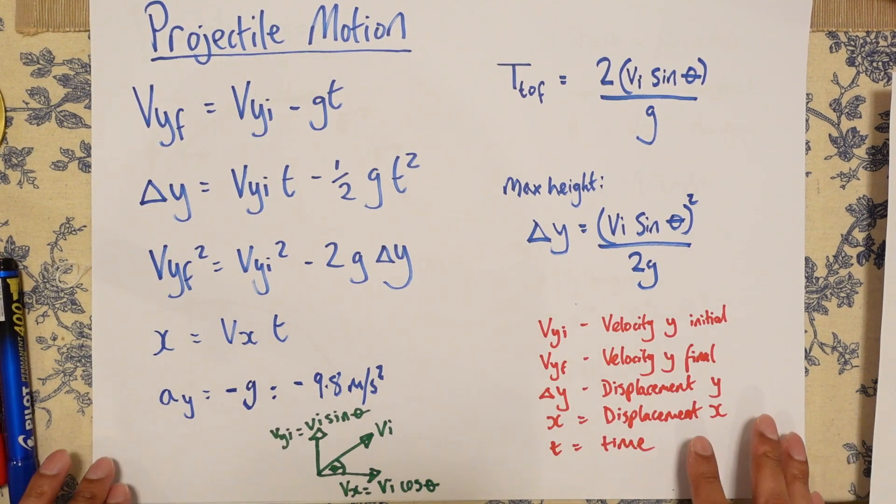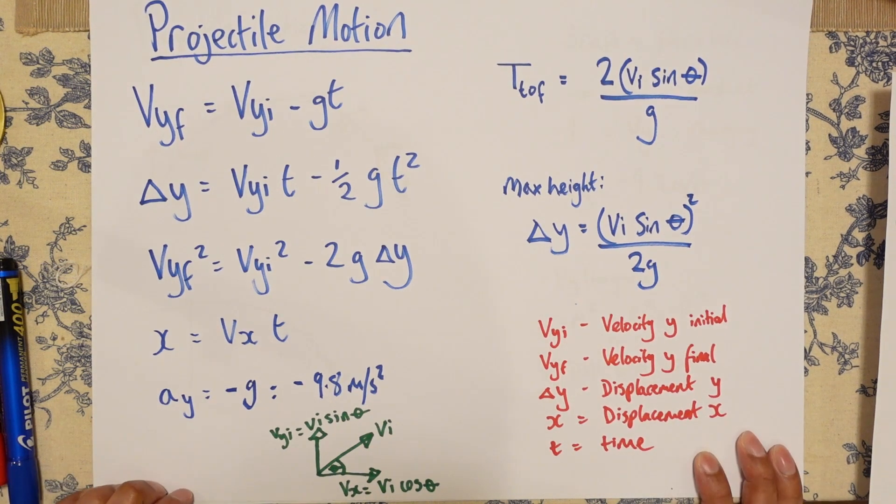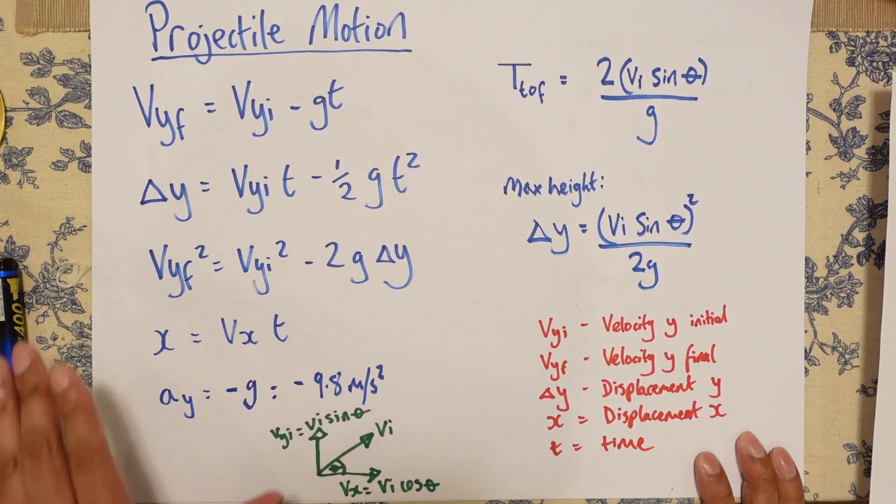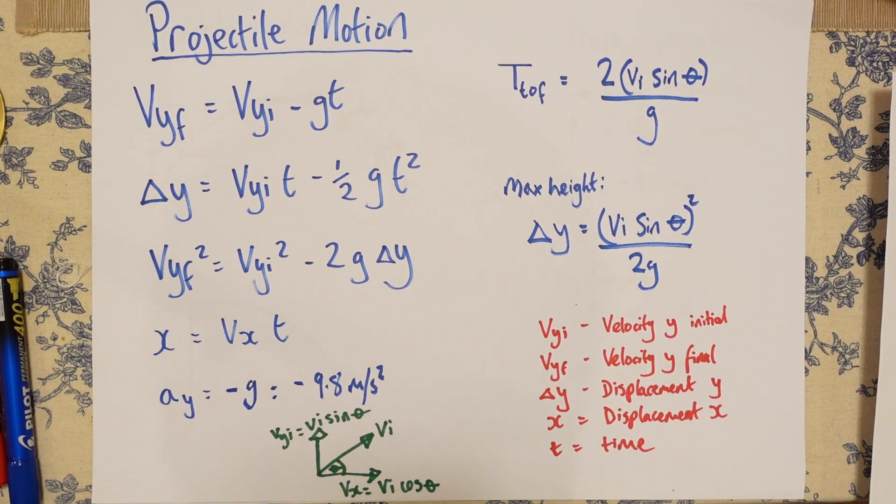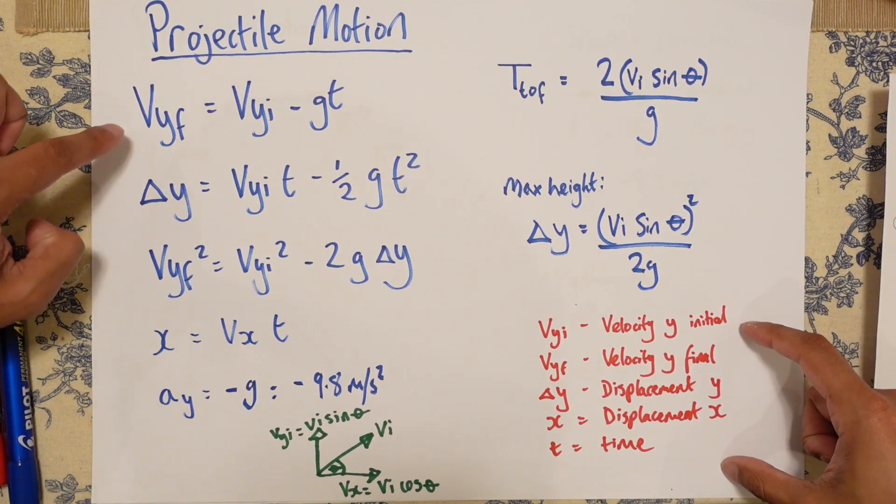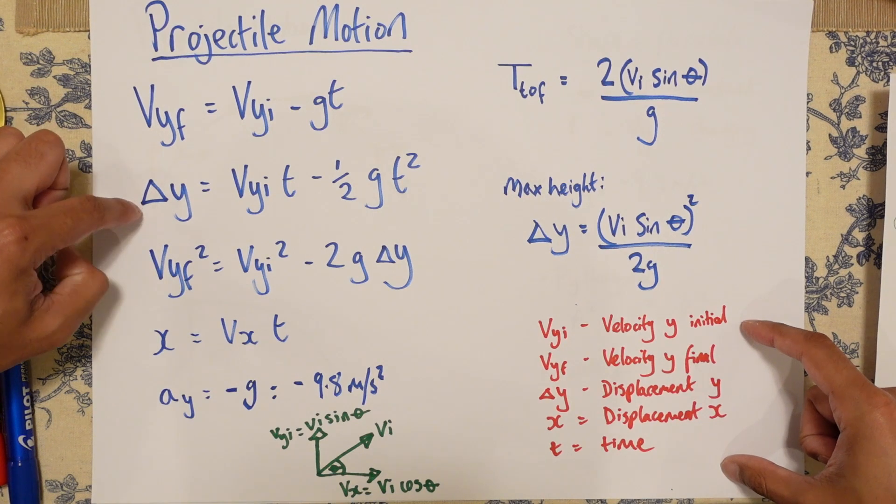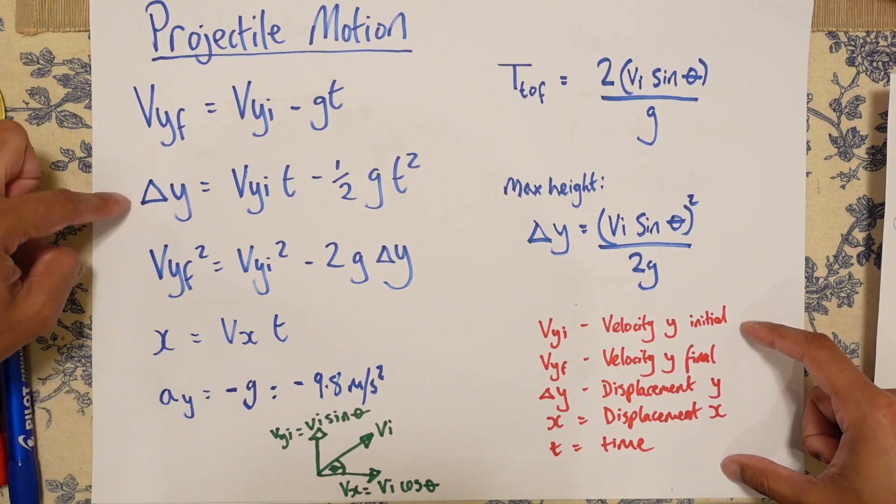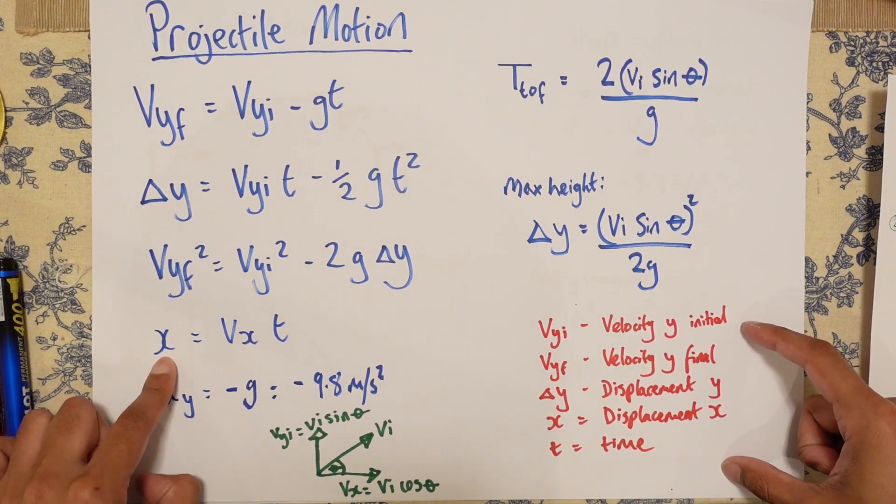I go over the basics here, but it's very similar to equations of motion. Everything looks pretty much the same. Got a few new things like VYF delta Y. This is displacement in the vertical. This is displacement in the horizontal.